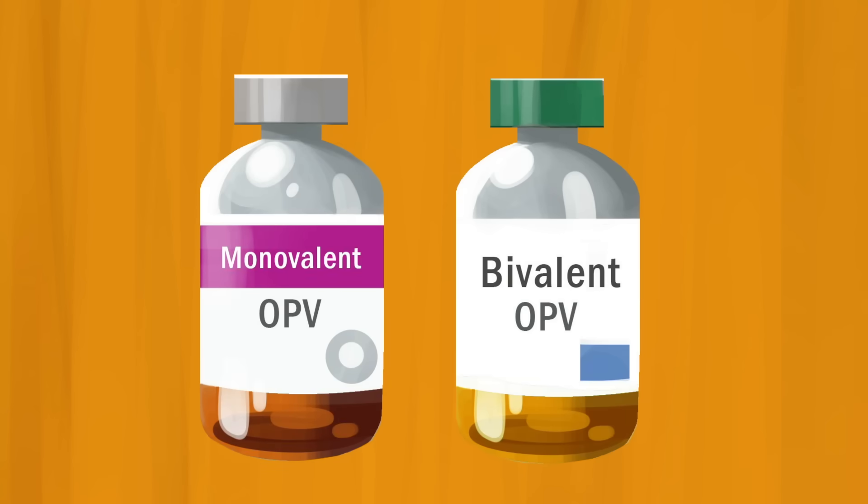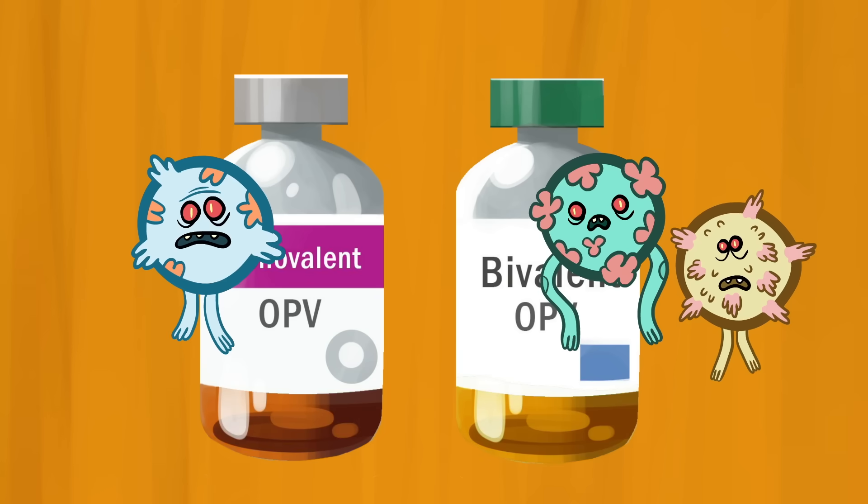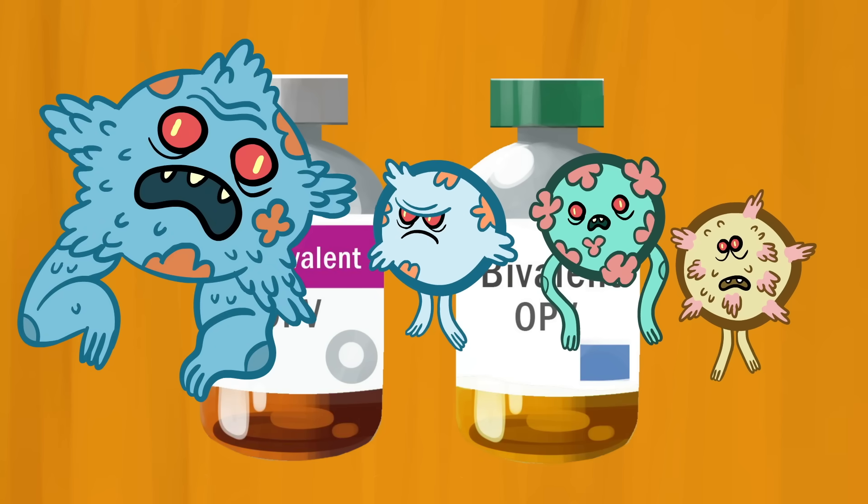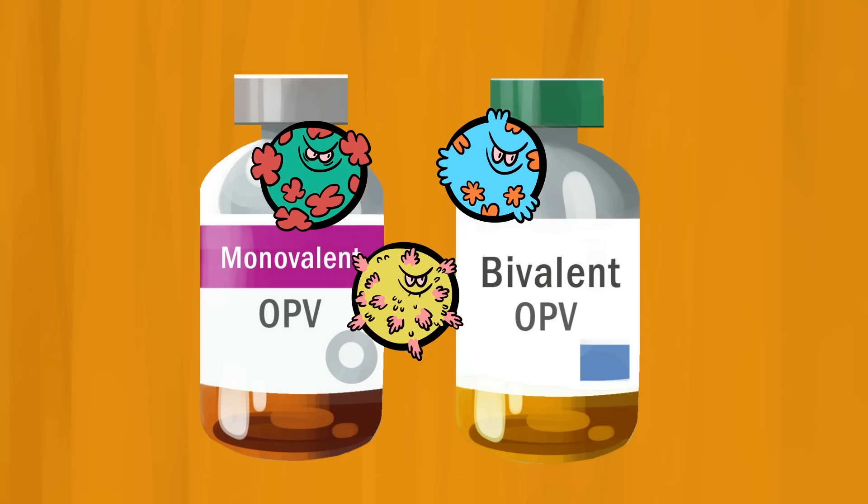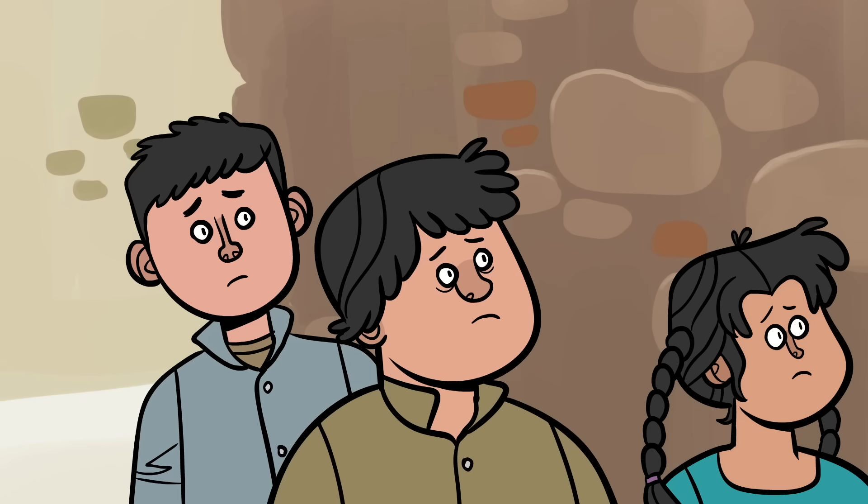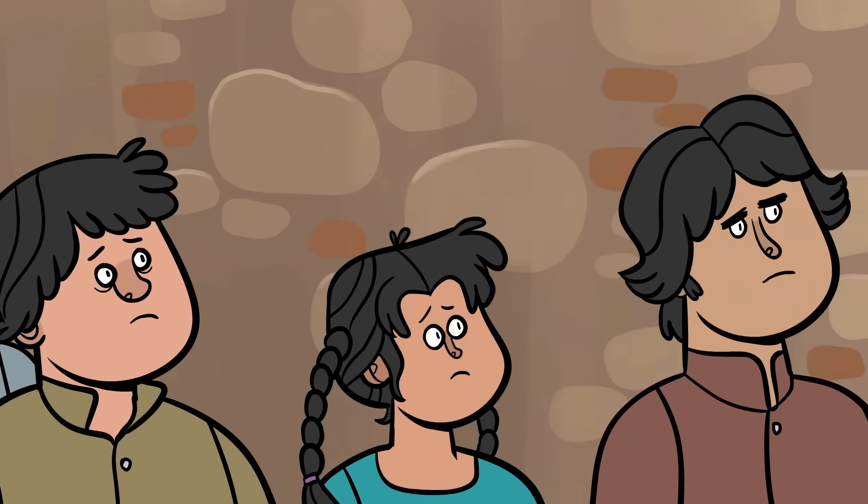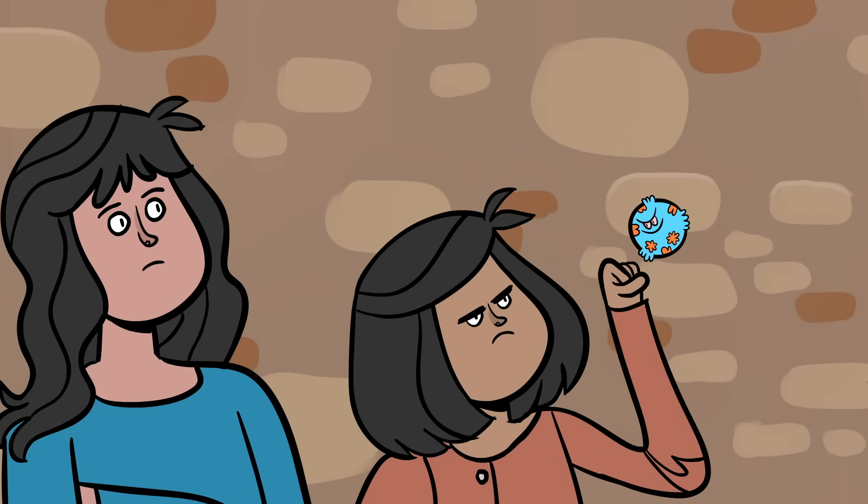Monovalent and bivalent OPVs, respectively, contain one or two types of attenuated poliovirus, reducing the number of strains that could possibly mutate. These vaccines helped eradicate wild poliovirus types 2 and 3. And today, they're tackling the last remnants of type 1 poliovirus in Pakistan and Afghanistan.